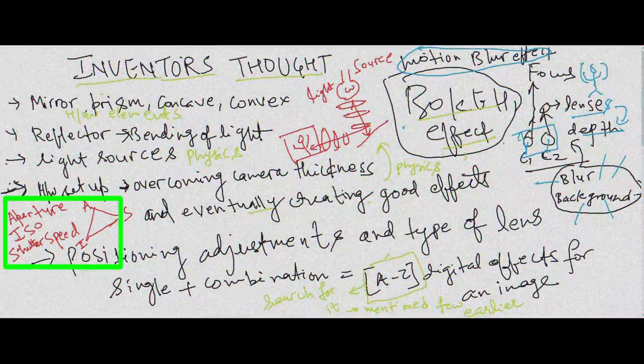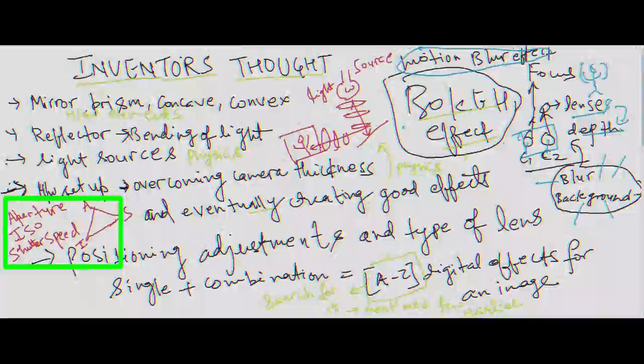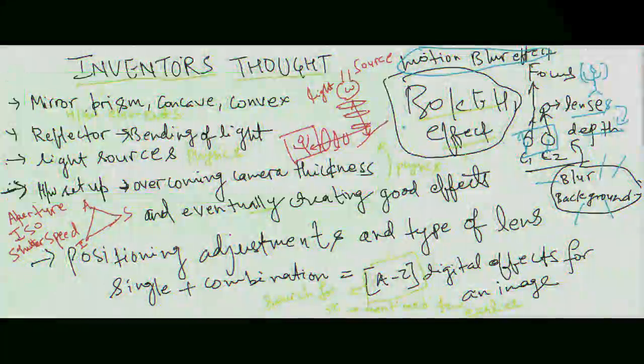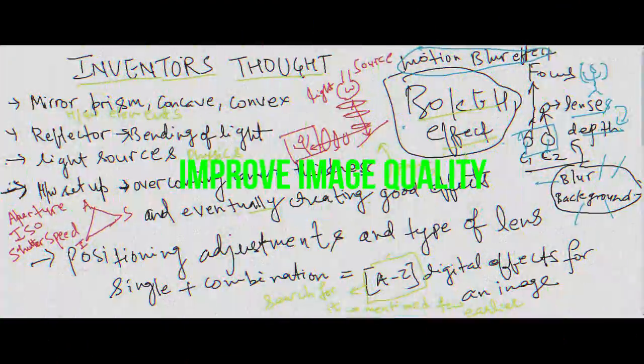Aperture, ISO, and shutter speed are hardware controllable parameters for producing digital effects. Not only hardware but image processing as software modules also enhances the image quality.